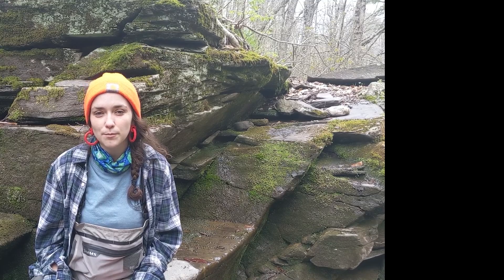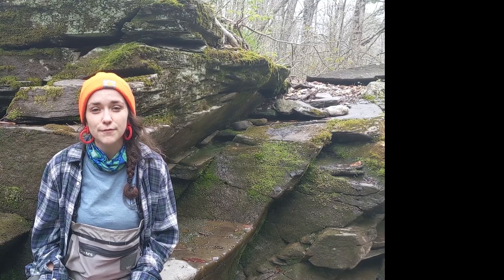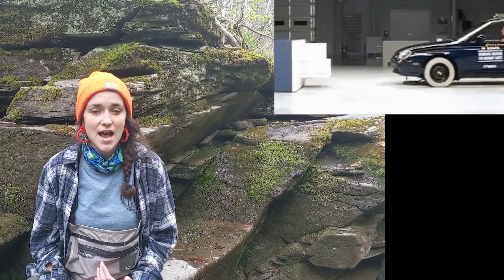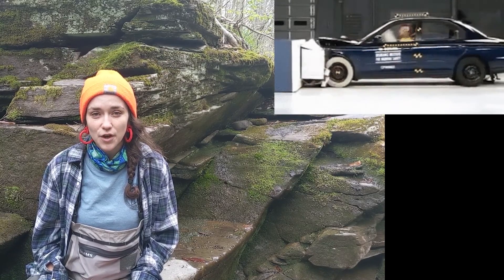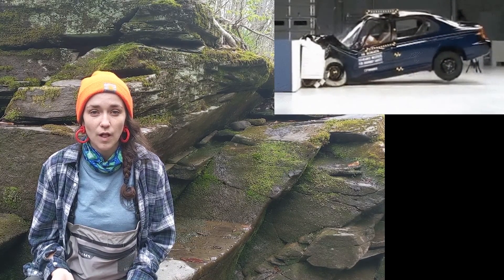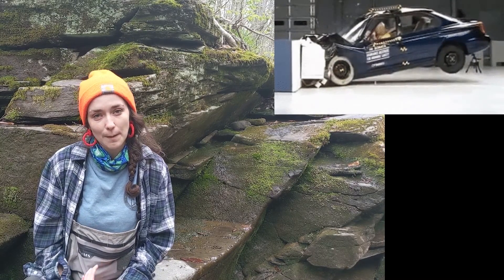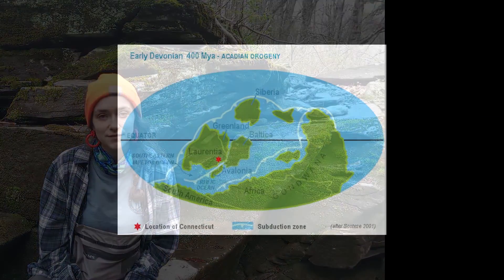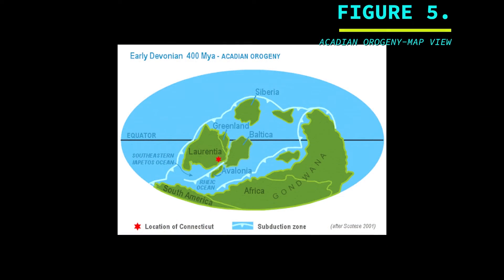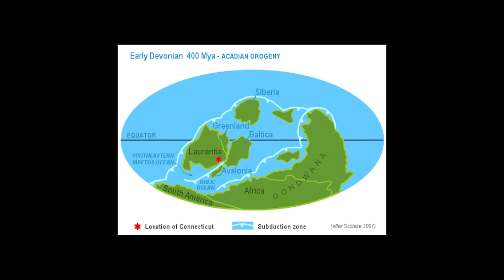Think of the lateral compression of the Earth's crust as the hood of a car during a car crash. After the collision, parts of the car's hood will buckle outwards while other parts will crumple inwards. During the Acadian Orogeny, an ancient small continent known as Avalonia collided with what is now the east coast of North America. The lateral compression from this collision results in the uplift of mountains along the eastern North American coastline.